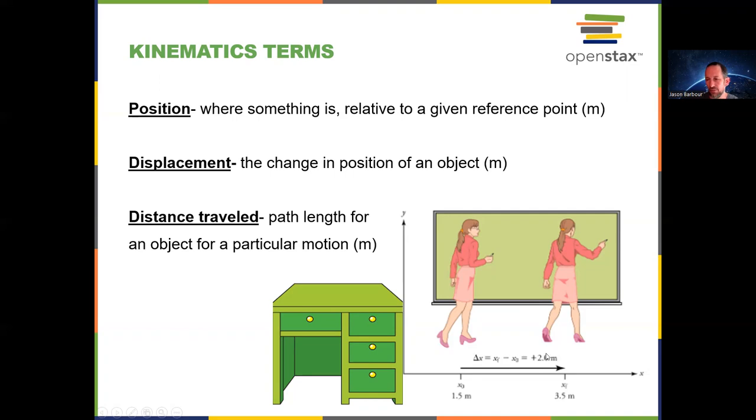In this case, it's 2 meters and it's positive 2 meters because she ended up 2 meters to the right of where she started. If she had started here and ended here, displacement would have been negative 2 meters. Either way, whether she went left to right or right to left, her distance traveled, which is a scalar, is 2 meters either way. And in parentheses here, I put the SI units for each of these and it's 2 meters in all cases.